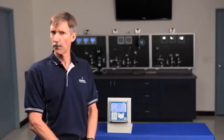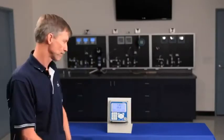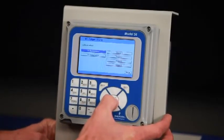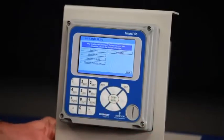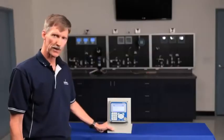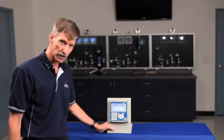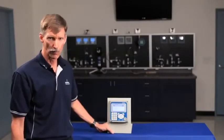So let's walk through a pH calibration as an example. Pressing enter gets into the menu system and you can see that a wide variety of different calibration methods are available with the Model 56, including automated calibration and several single point methods of calibration.